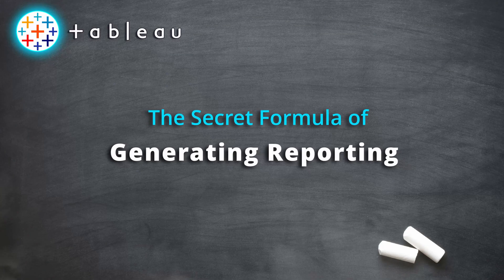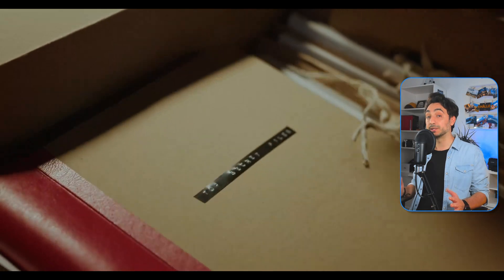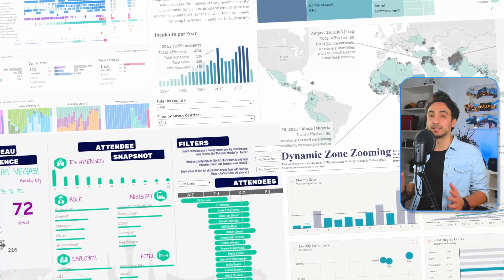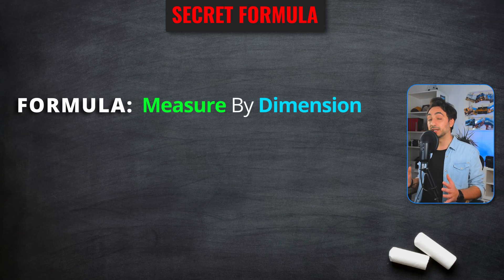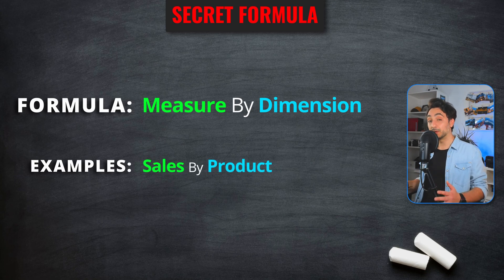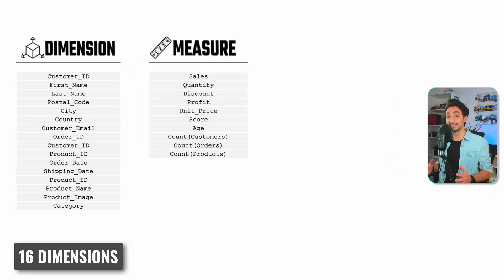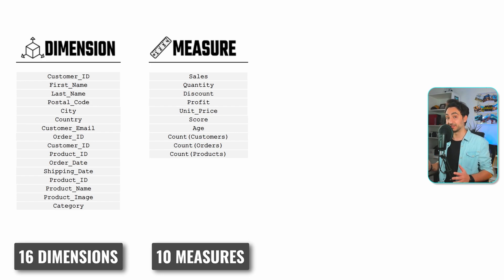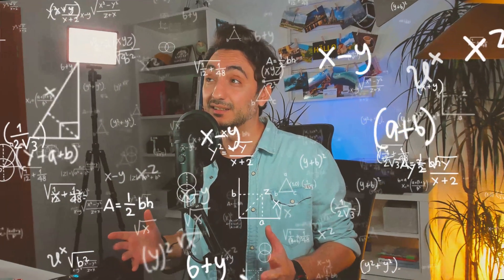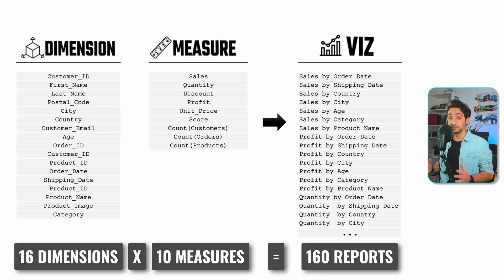Here's a small secret: if you combine any measure with any dimension, you create a new view or report following this pattern — measure by dimension. For example: sales by product, profit by category, quantity by country. With around 16 dimensions and 10 measures in our small datasets, you can generate around 160 views and reports just by following this rule.